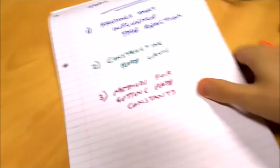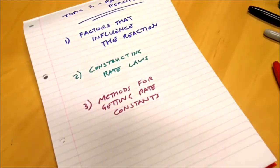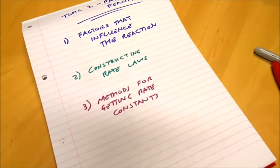These three objectives cover everything you need to know about rates of reaction as an undergraduate chemist. It might seem simple at first, but there's a lot buried in these topics.